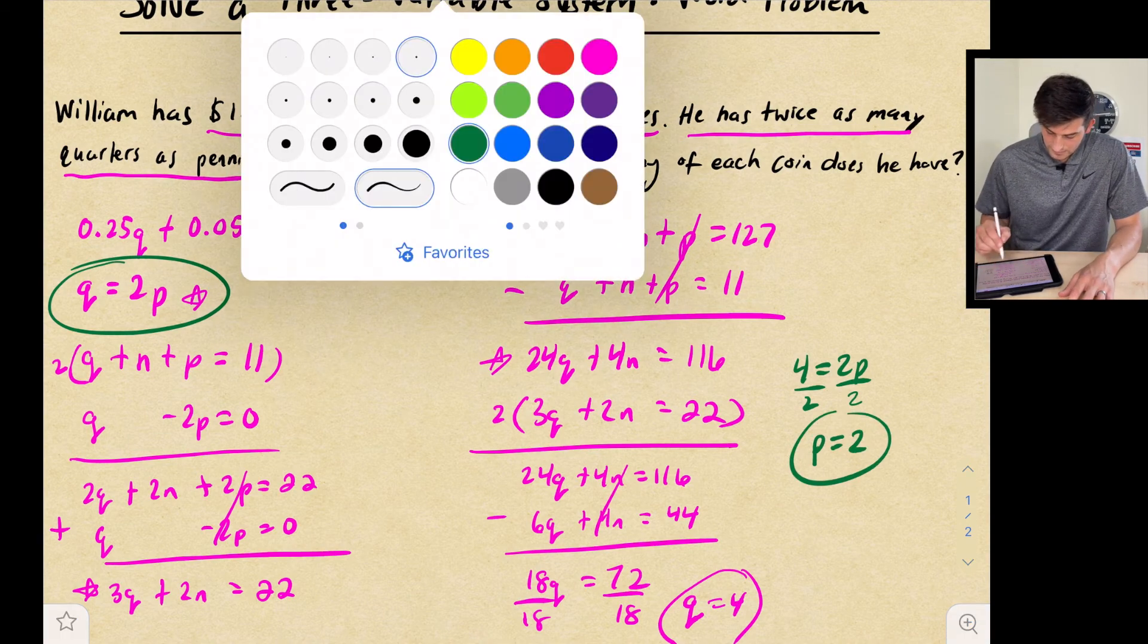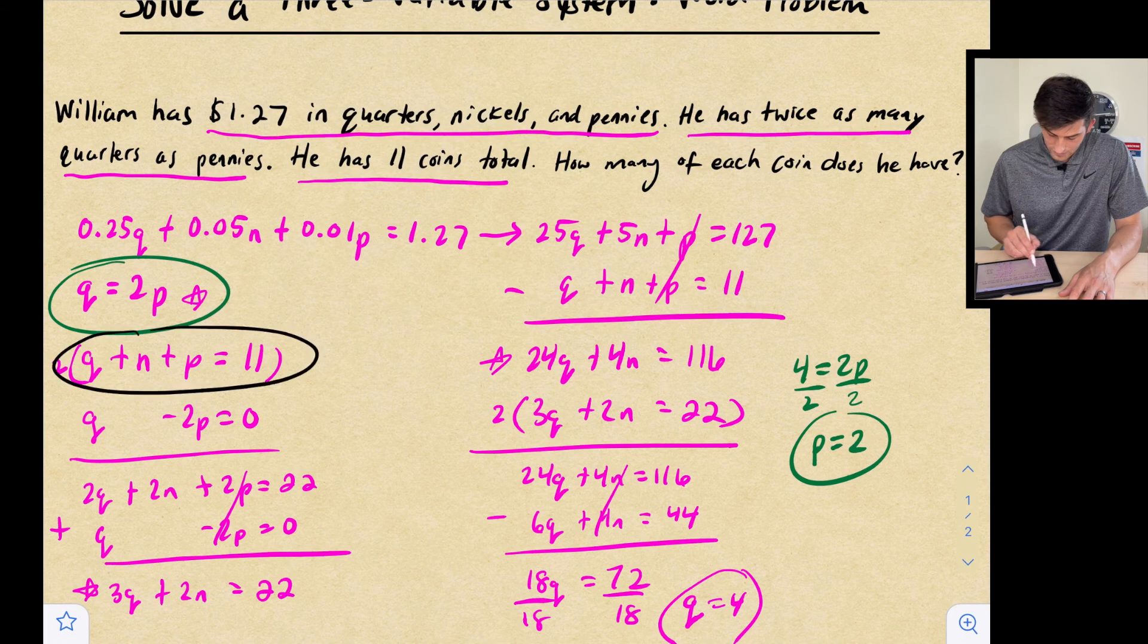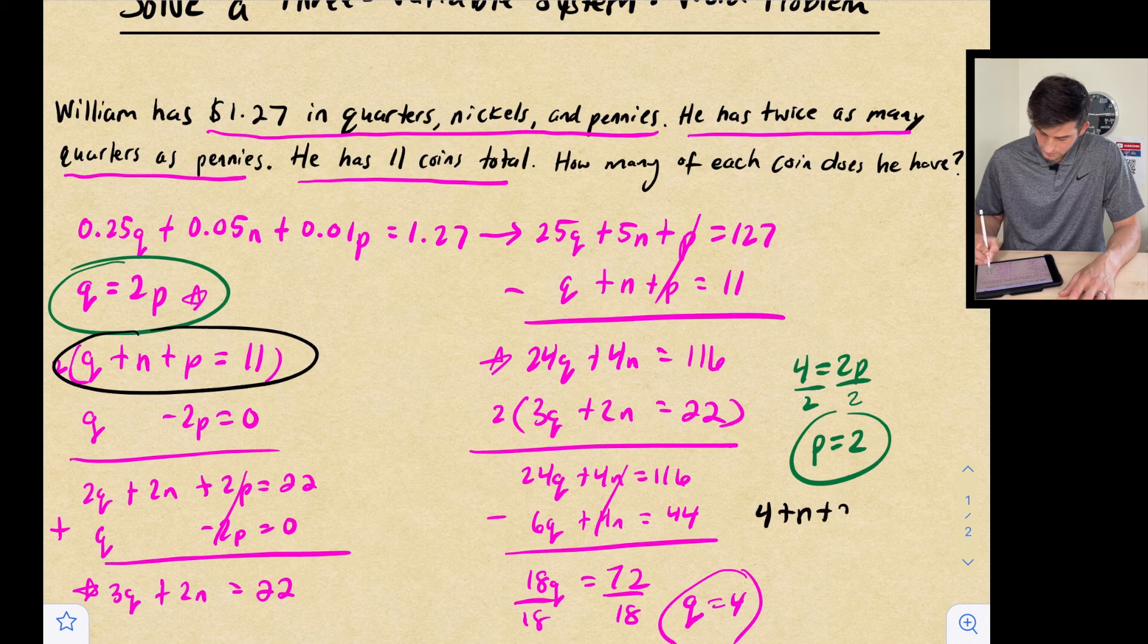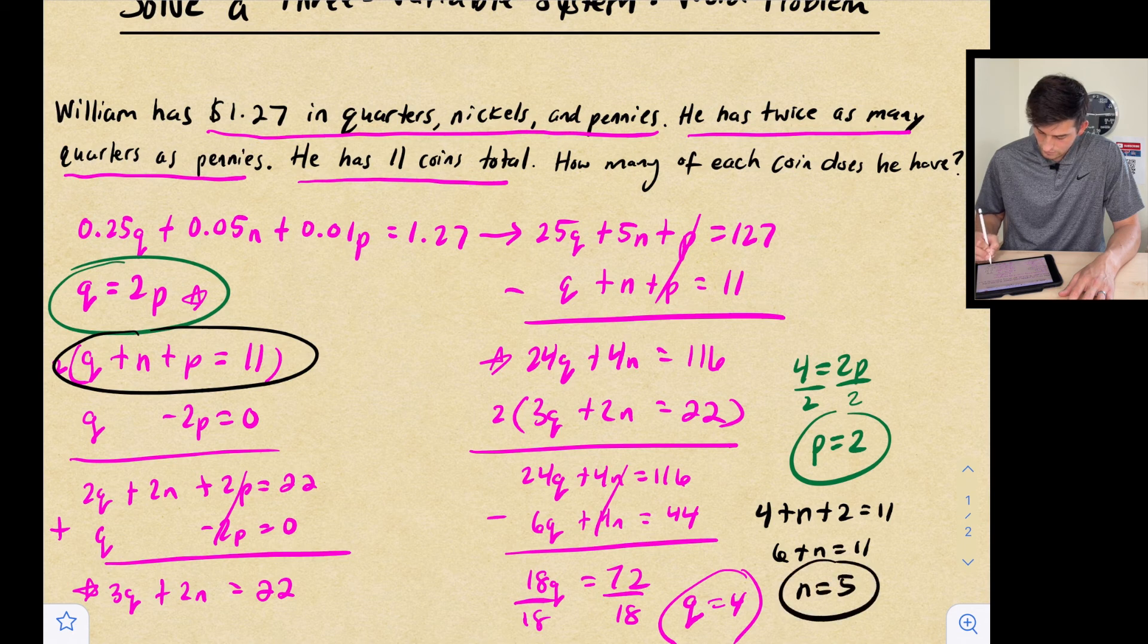Now we go back to our last equation here. Q plus N plus P equals 11. So Q is 4 plus N plus P is 2 equals 11. So this would be 6 plus N equals 11. And we get N is equal to 5.